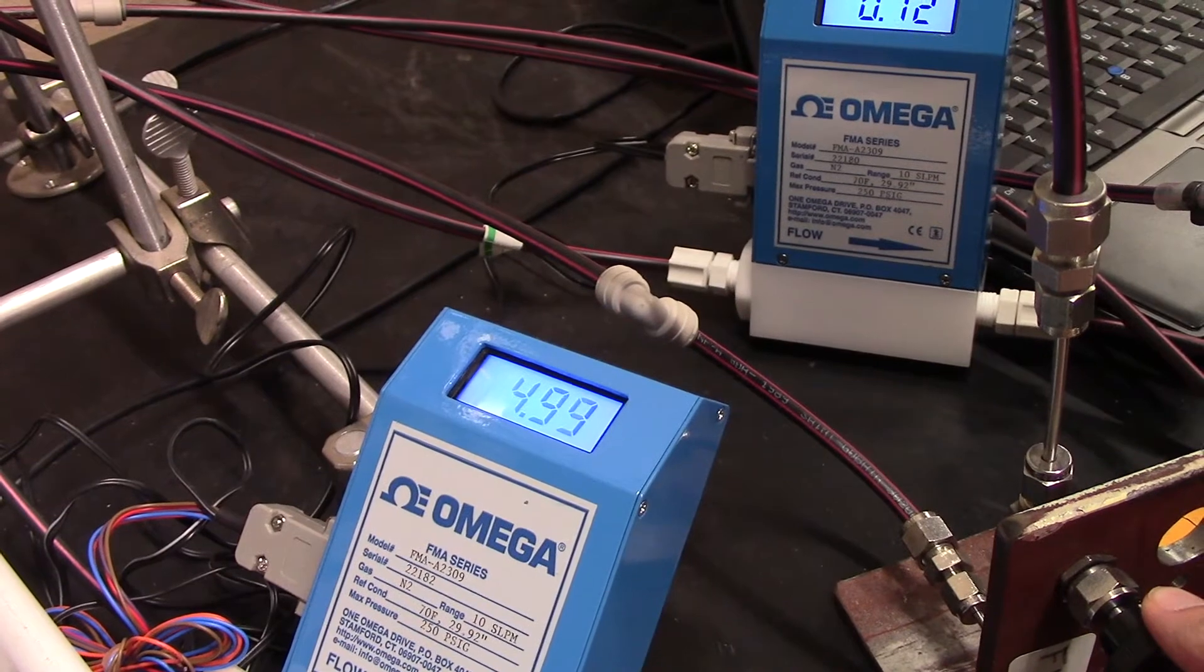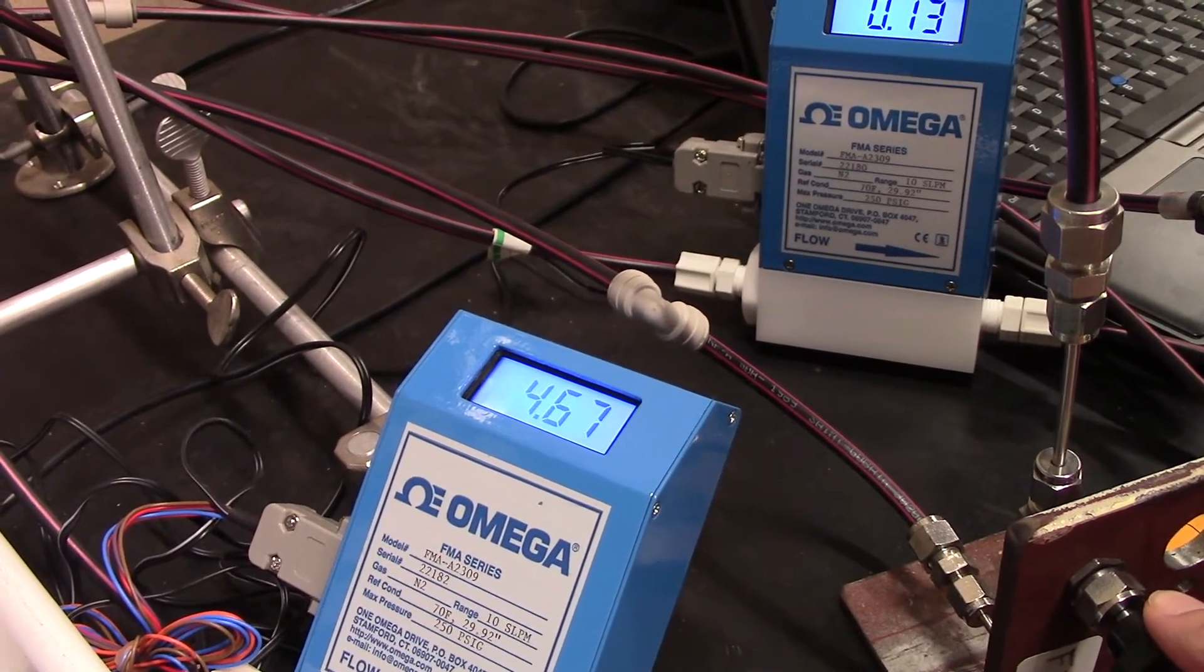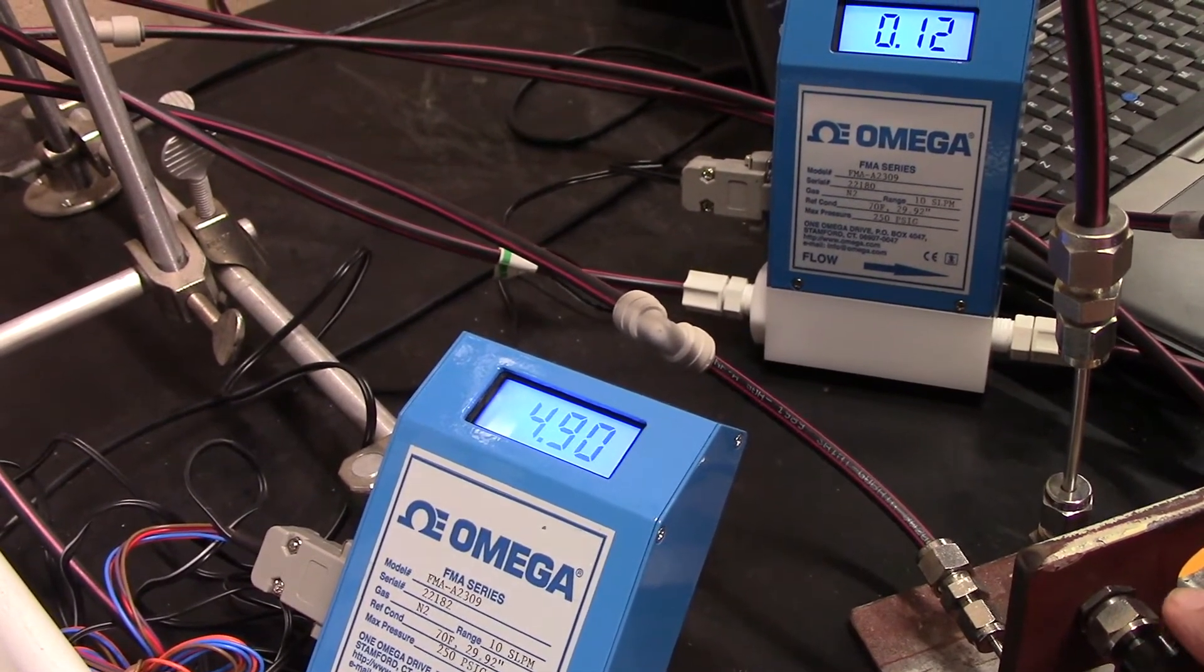With your column set up, it is now time to begin the experiment. Start by loosening the nitrogen valve up to the desired flow rate, in this case being five standard liters per minute.